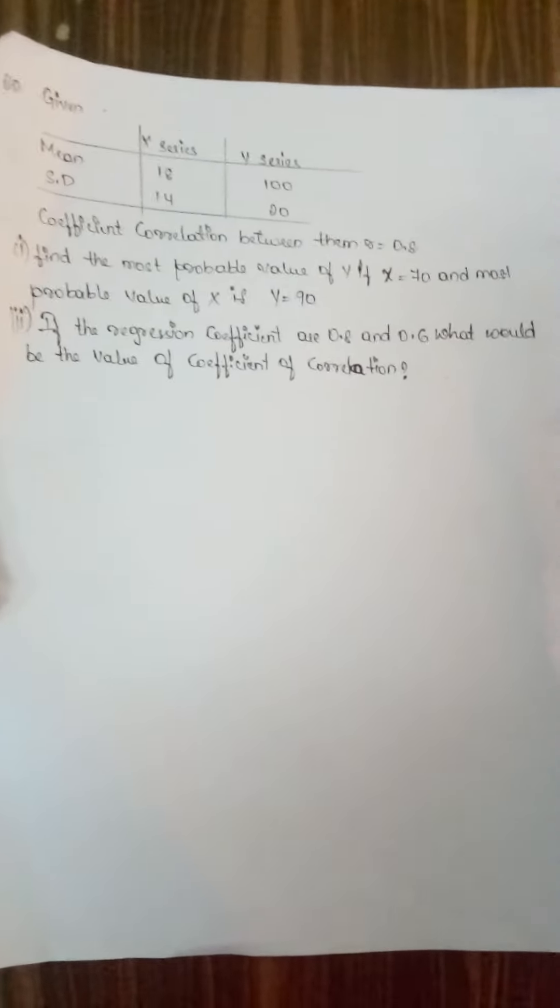Means bxy is given, by x is given, we have to find out correlation once again. Both bxy into byx, 0.8 into 0.6 you have to multiply and you have to take a root. See my students, hope you have copied this.